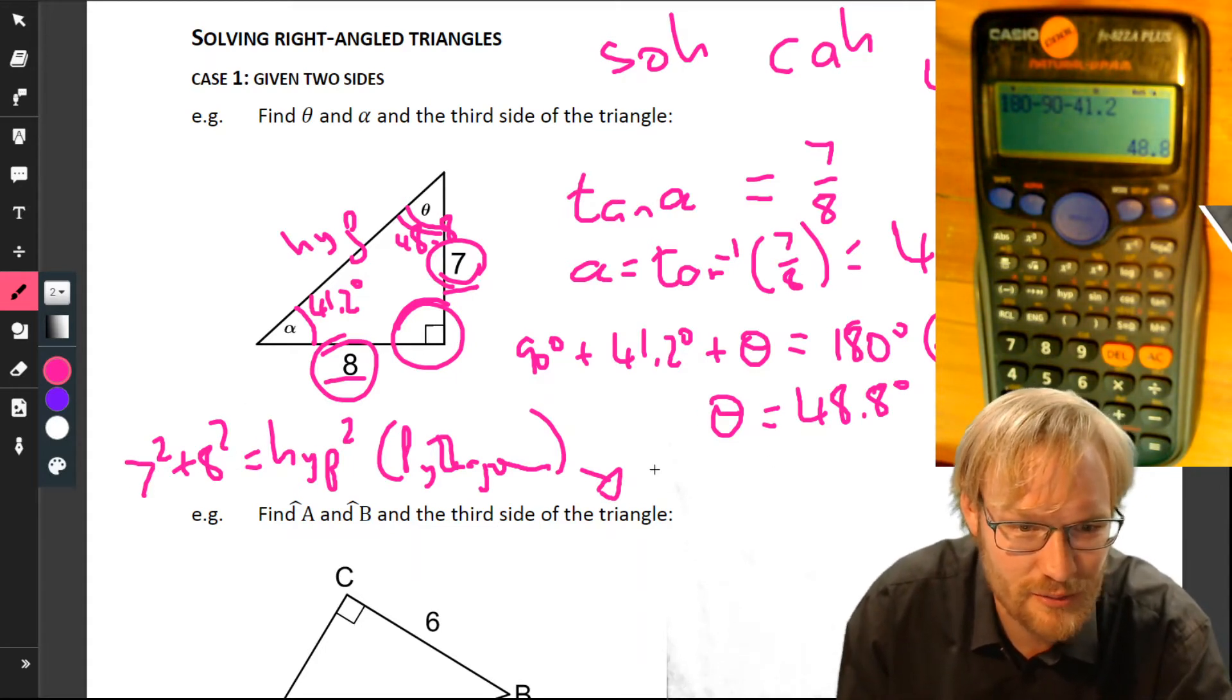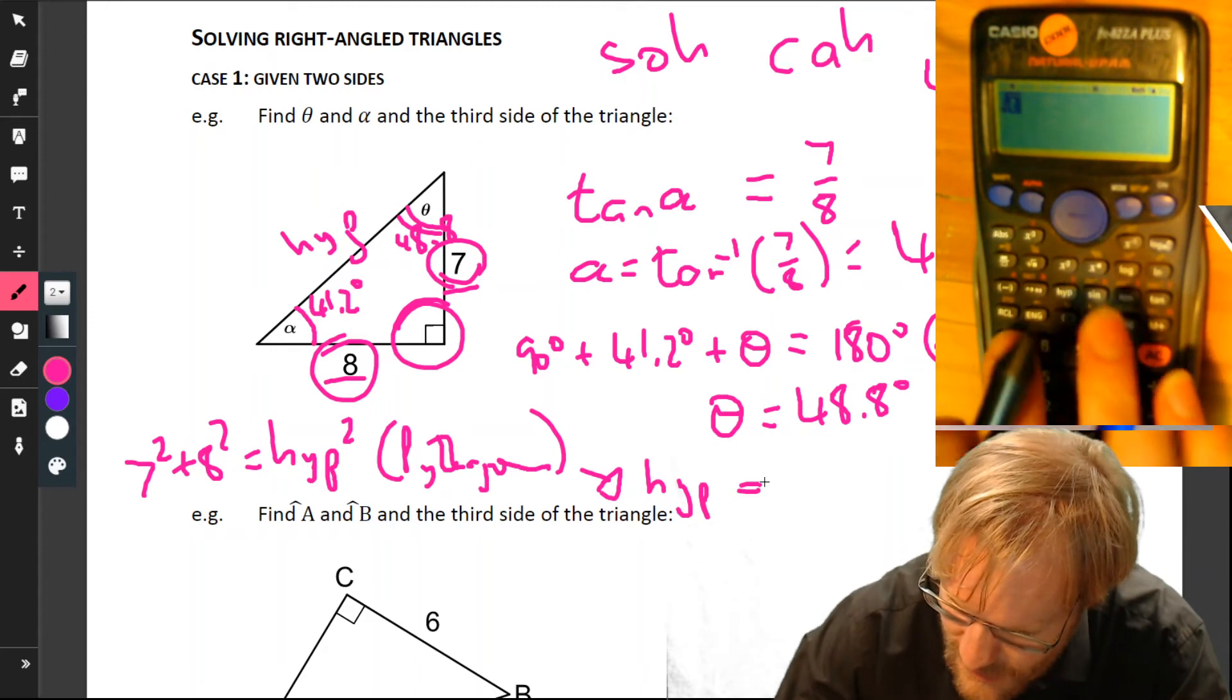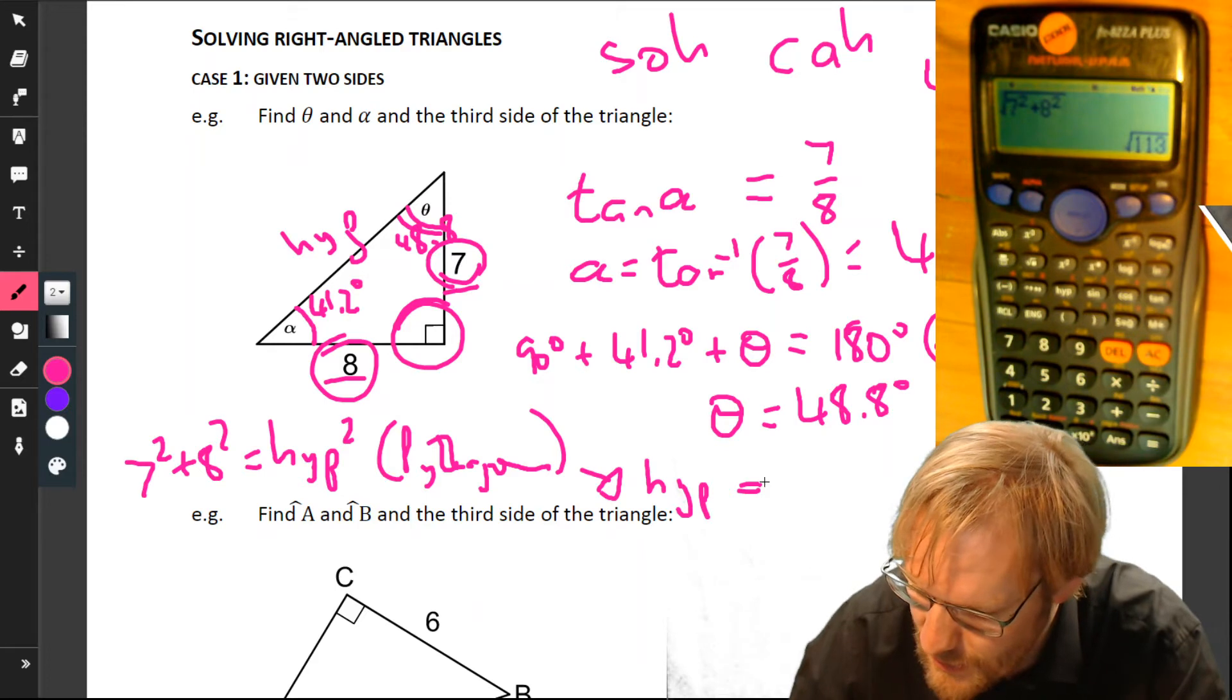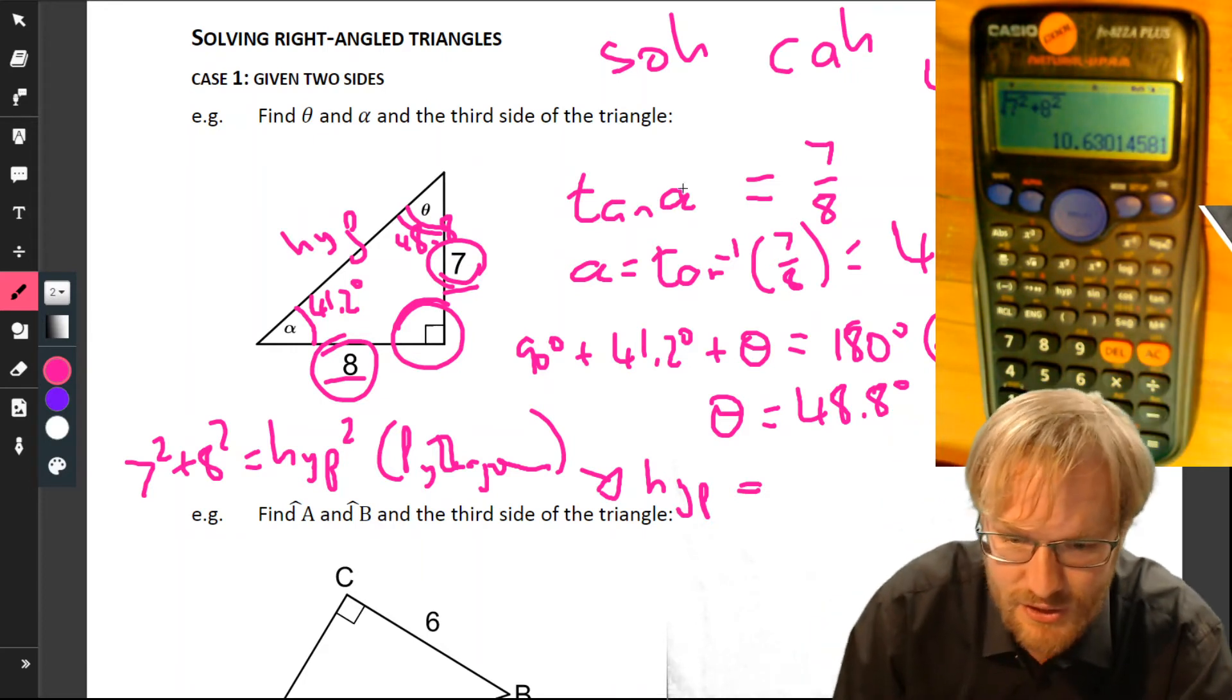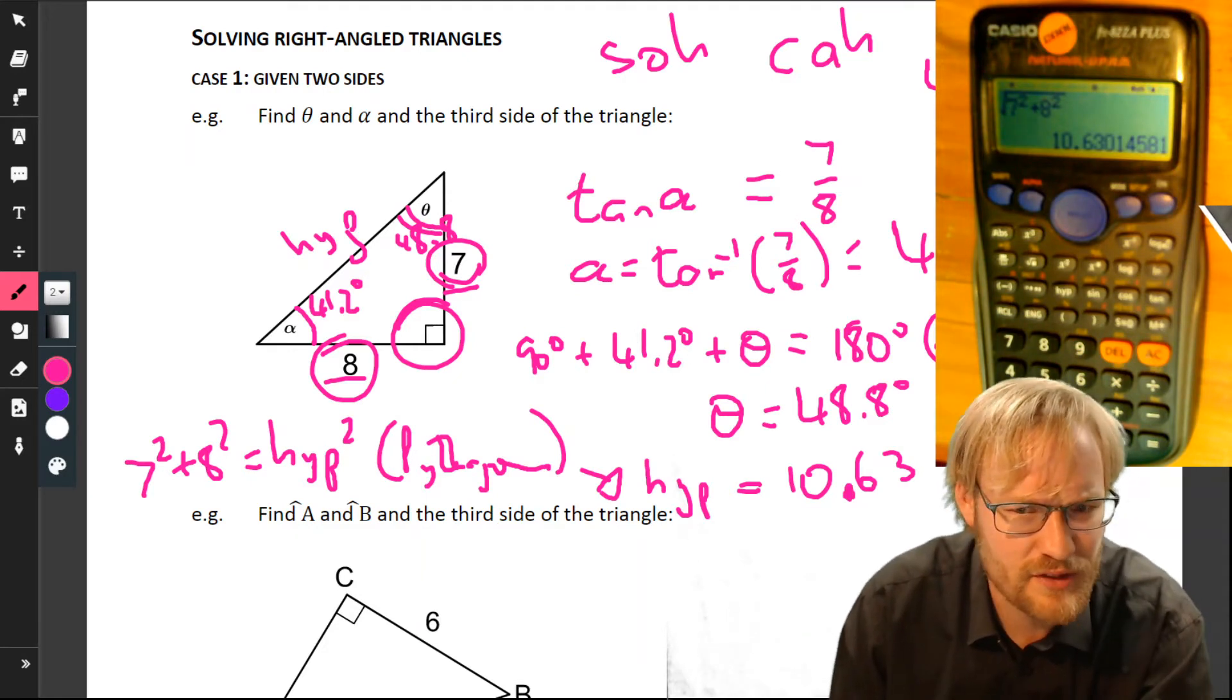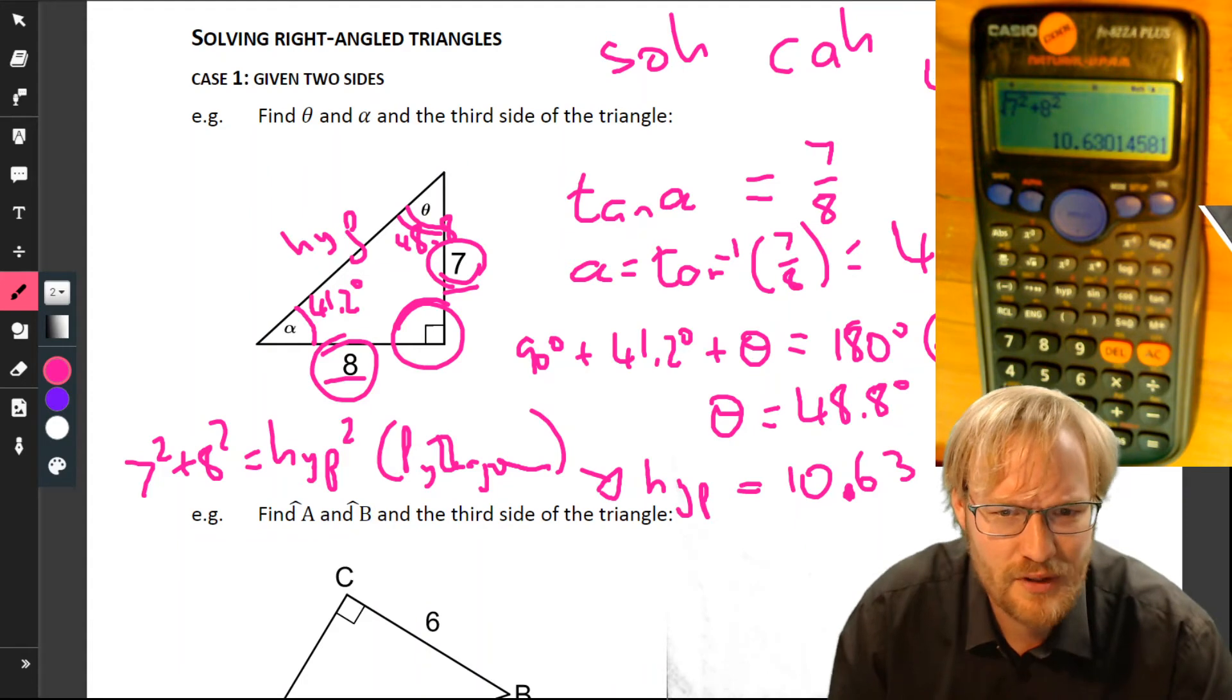7 squared plus 8 squared, square root, and we'll get our hypotenuse. So hypotenuse equals square root of 7 squared plus 8 squared. Square root of 113, S-D, it's our friend 10.63. So 10.63. Units we don't have—centimeters, meters—so we can just leave it unitless.